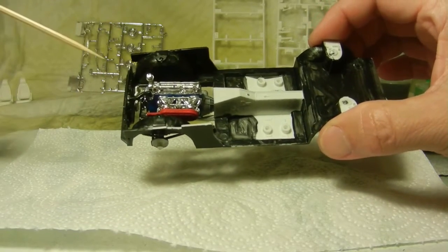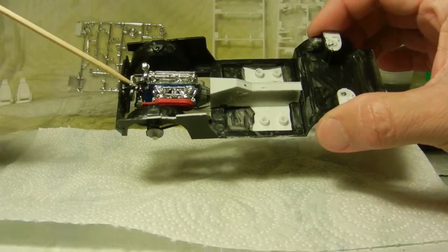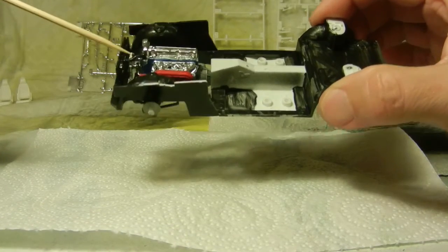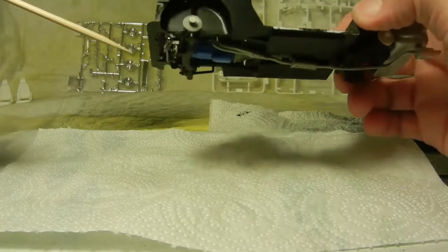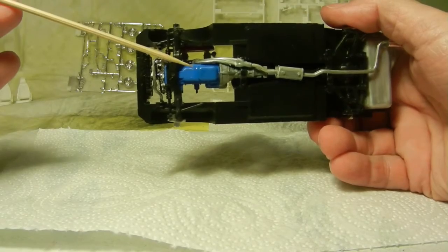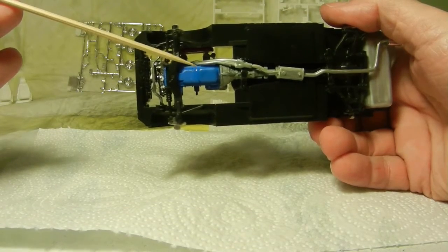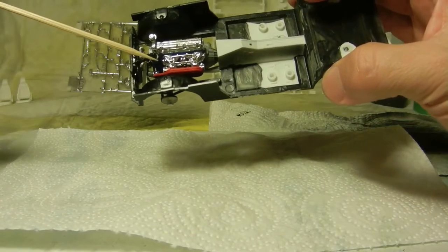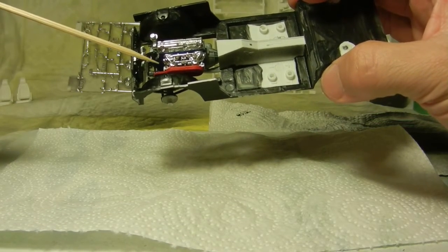As you can see I painted the air cleaner red just to give a little contrast there, and as far as the engine block itself we used some gloss blue acrylic paint from Craftsmart. The actual air cleaner is the Folk Art engine red.